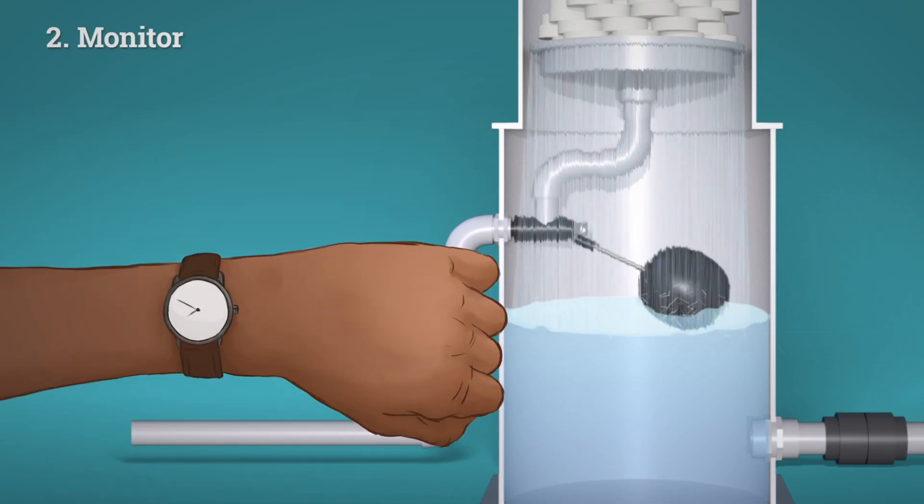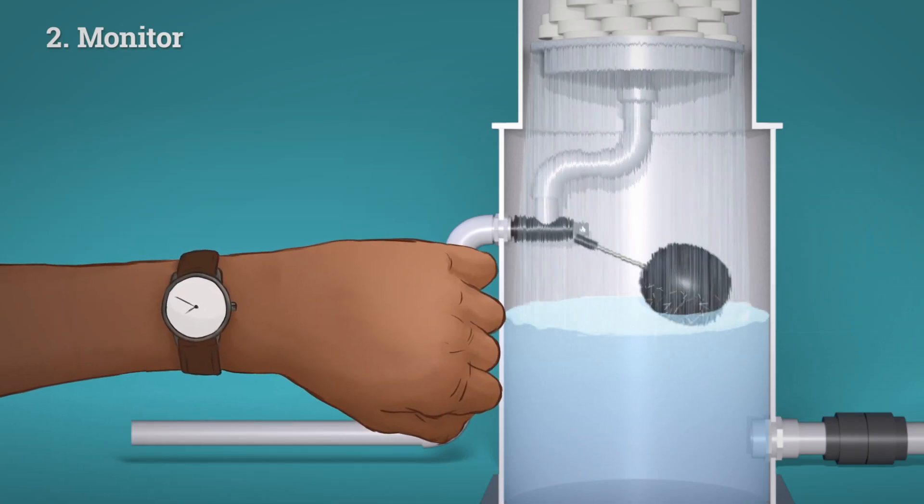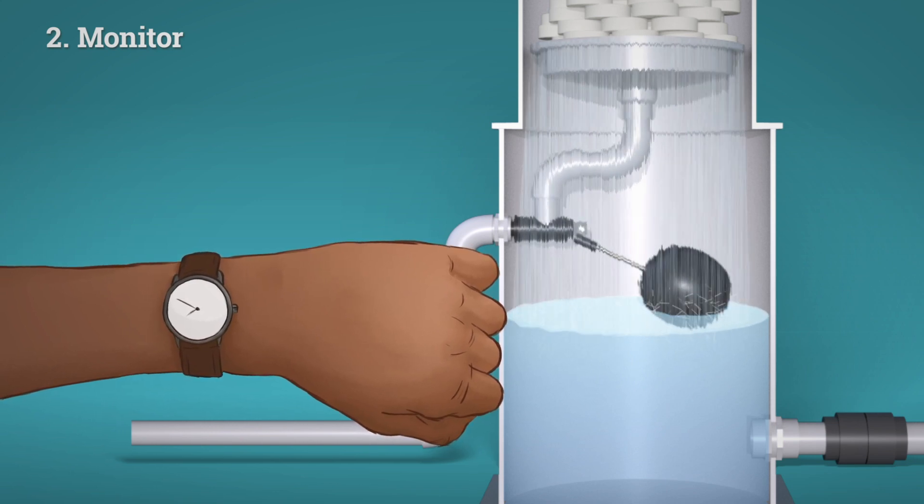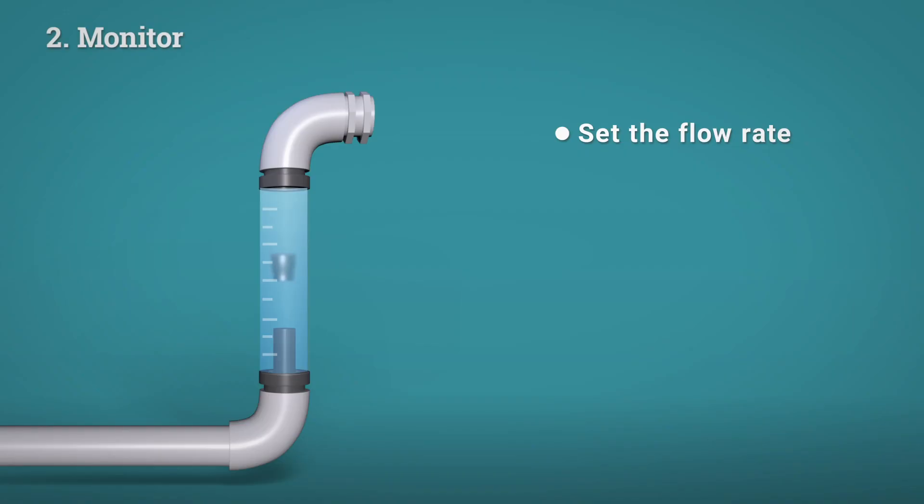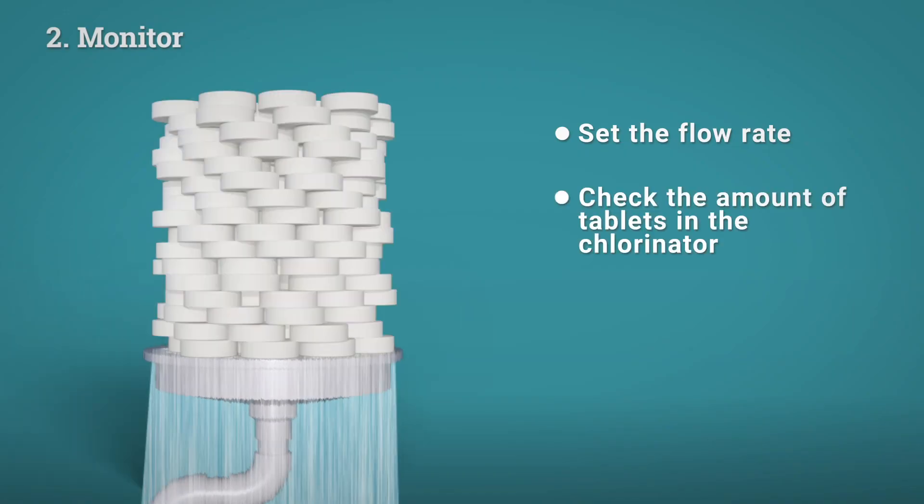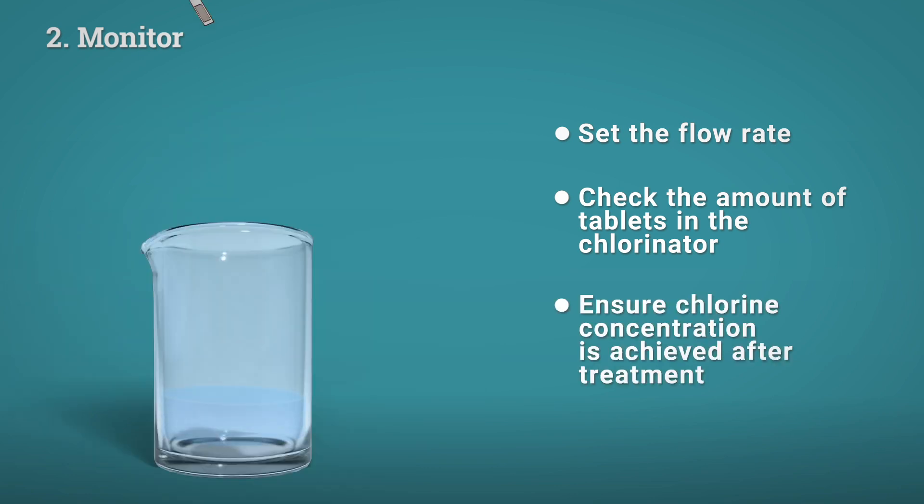After validation, you will need to monitor the system on a regular basis to make sure the critical factors are being controlled and the water is being consistently treated. Examples of monitoring would be ensuring the flow rate is set appropriately, that there are tablets in the chlorinator, and that the appropriate free chlorine concentration is being achieved after treatment.